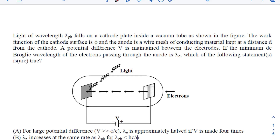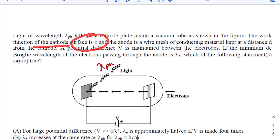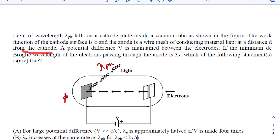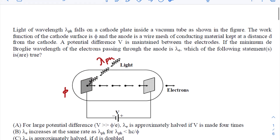Let's go through the question quickly. Light of wavelength lambda_ph falls on a cathode plate inside a vacuum tube as shown in the figure. The work function of the cathode surface is phi, so phi amount of energy is required at minimum to pull an electron from this plate. The anode is a wire mesh conducting material kept at a distance d from the cathode, and a potential difference V is maintained between the electrodes.